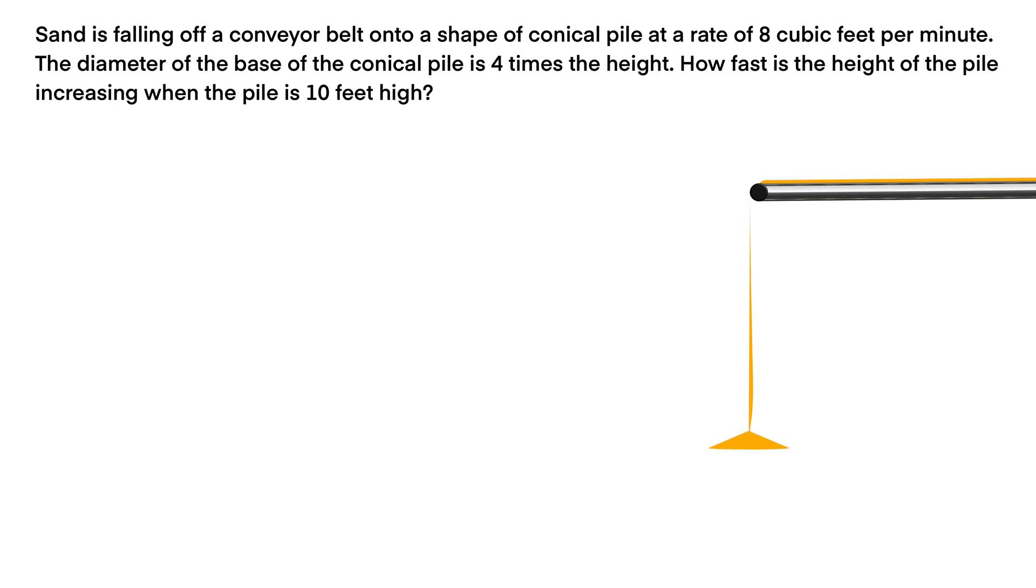Sand is falling off a conveyor belt onto a shape of conical pile at a rate of 8 cubic feet per minute. The diameter of the base of the conical pile is 4 times the height. How fast is the height of the pile increasing when the pile is 10 feet high?